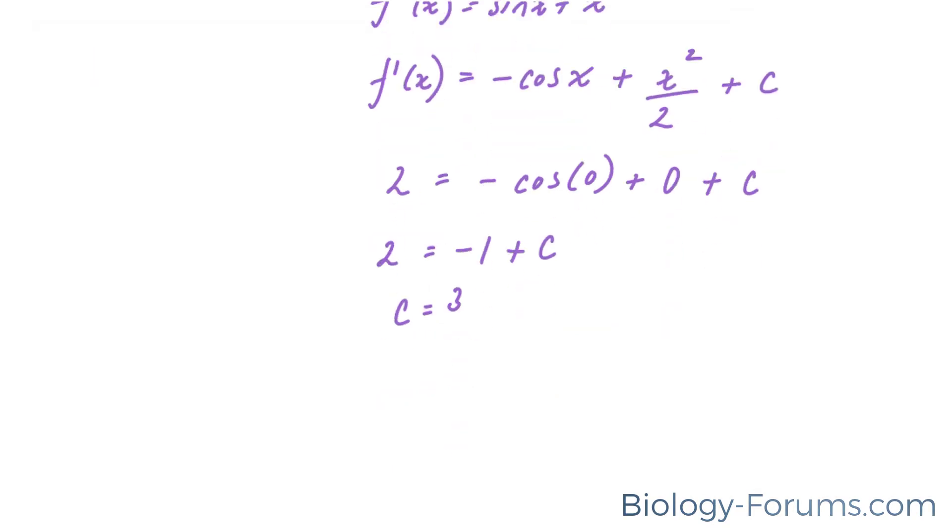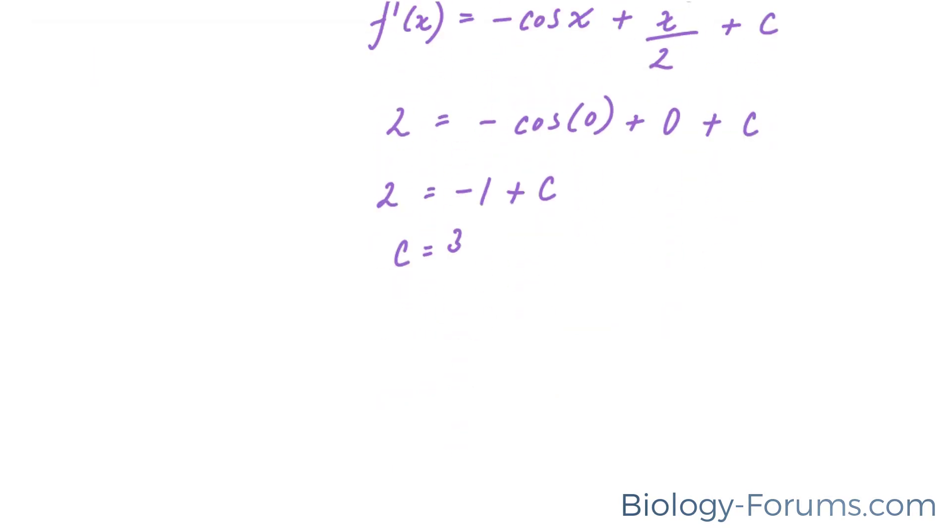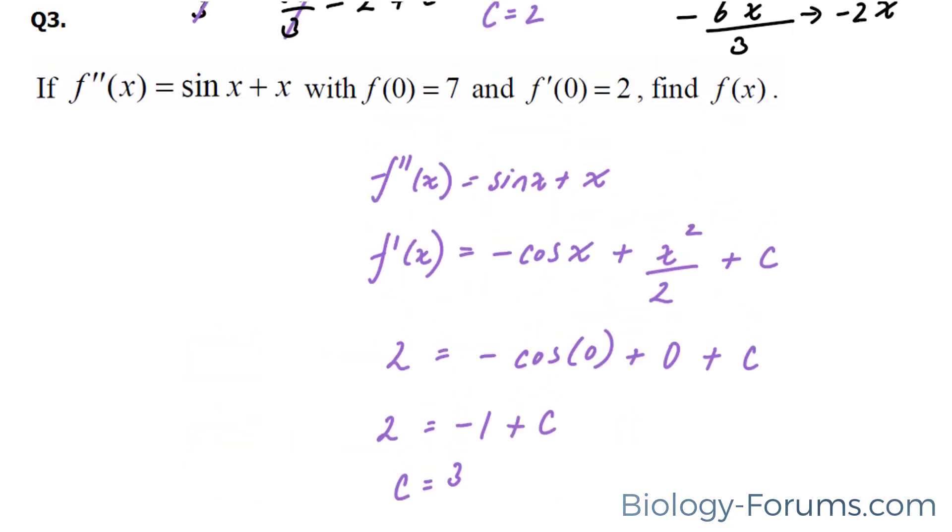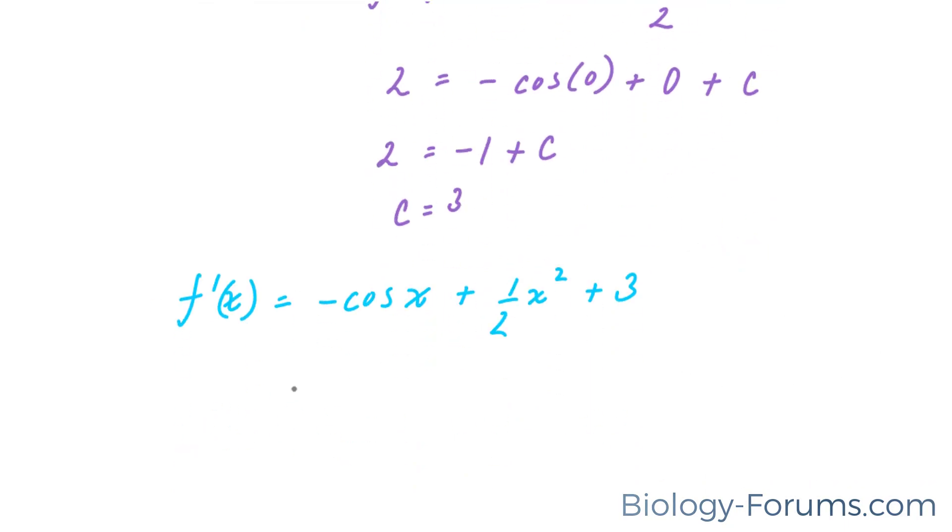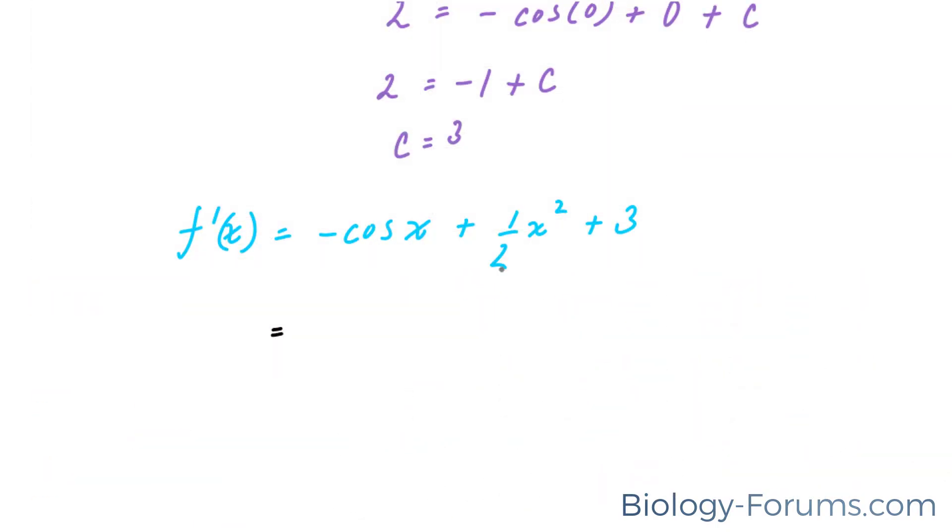So I'm going to rewrite f prime, including c. Now recall, the question wants f at x, and we're also told that f at 0 is equal to 7. So keep that in mind moving forward. Let's find the antiderivative of this. Negative cosine x becomes, let's use our chart, negative cosine x becomes negative sine x plus. And once again, we're finding the antiderivative, so that becomes x to the power of 3, and 3 times 2 is 6. 3 becomes 3x.